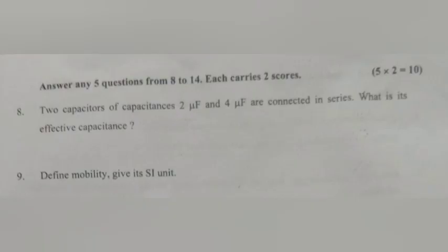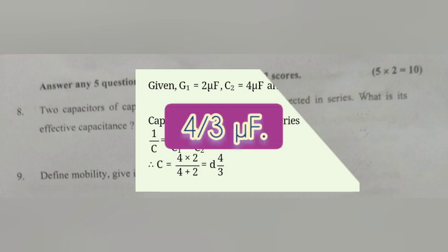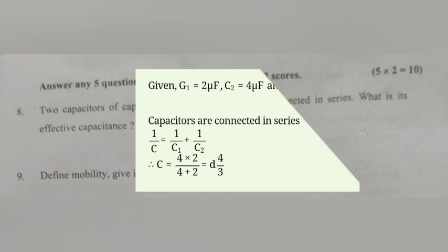Question 8. Two capacitors of capacitance 2 microfarad and 4 microfarad are connected in series. What is the effective capacitance? Given c1 equals 2 microfarad, c2 equals 4 microfarad. Capacitors are connected in series. 1 by c equals 1 by c1 plus 1 by c2. Applying values, we get c equals 4 into 2 by 4 plus 2. The answer is 4 by 3 microfarad.